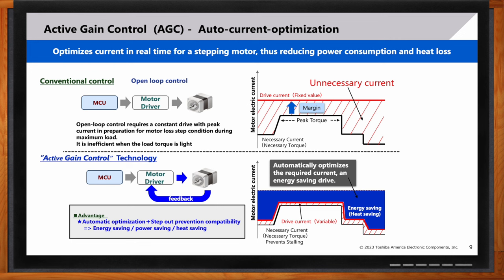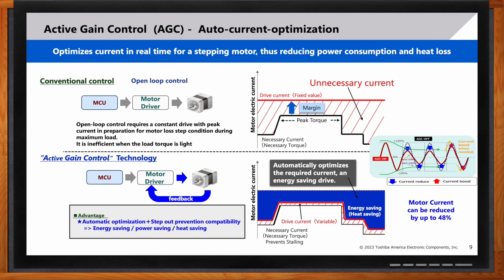With the active gain control technology, we integrate some feedback to essentially detect what is required for the load. This feedback allows us to automatically optimize the current drive. It gives us enough current to meet the maximum torque requirements, but then reduce the current when we don't need that full drive capability. It can also monitor to make sure that it will boost up the current to prevent step-out when the torque increases. You can see on this last image on the far right, the red line kind of indicates where you're seeing performance with the AGC on and AGC off. And you can see the real difference in the amount of current driven. In some systems, we have seen up to 48% reduction in the current required. As you can imagine, this can be a significant benefit for the system.